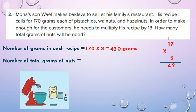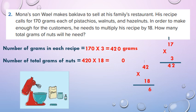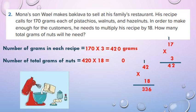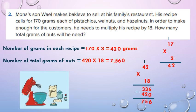Number of total grams of nuts: we multiply this number by 18. So he multiplies the recipe by 18. Put 0 first, then multiply 51 by 18 in draft. 8 by 1 equals 8, 8 by 5 equals 40 and 0, then add. 3 plus 2 equals 5, 3 plus 4 equals 7. So the total grams of nuts: 7,560 grams.